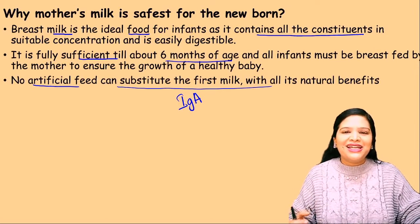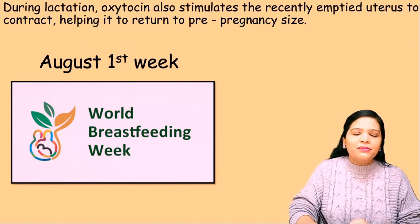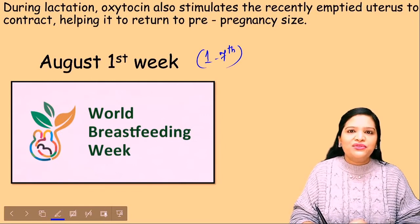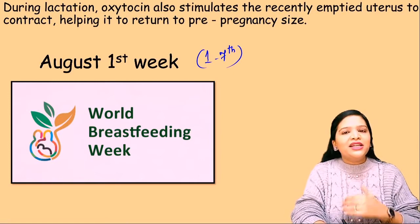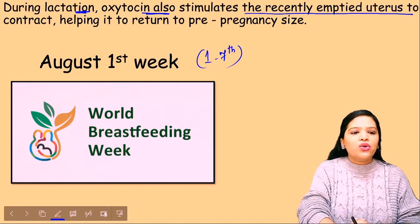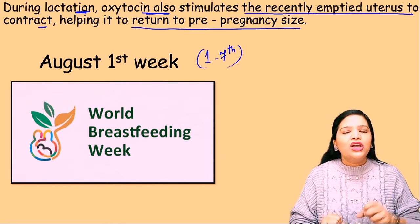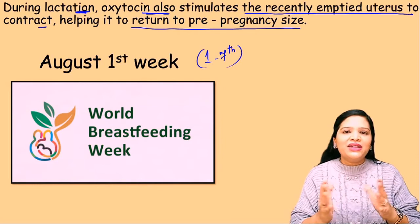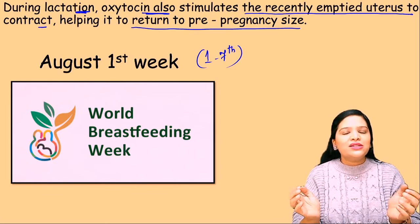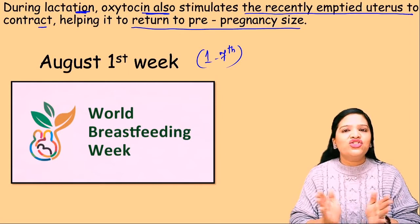Mother's milk is the safest and ideal food for the newborn baby because it contains all constituents in a balanced amount — no need to give honey, sugar, or water to the baby for at least six months, as everything needed for the baby's growth and nutrition is present in mother's milk. No artificial feed can substitute the first milk — colostrum — because it naturally contains immunoglobulin, minerals, and bacteria. Every year, the first week of August (1st to 7th August) is celebrated as World Breastfeeding Week. Additionally, during lactation, oxytocin stimulates the recently emptied uterus to contract, helping it return to its pre-pregnancy size — so breastfeeding is also essential for the mother to regain her original uterus size.